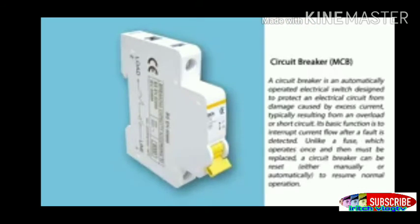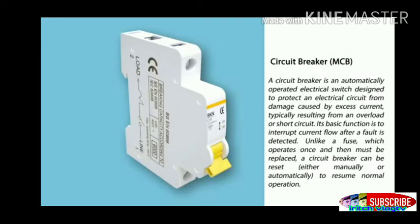A circuit breaker is an automatically operated electrical switch designed to protect an electrical circuit from damage caused by excess current, typically resulting from an overload or short circuit. Its basic function is to interrupt current flow after a fault is detected. Unlike a fuse which operates once and then must be replaced, a circuit breaker can be reset either manually or automatically to resume normal operation.